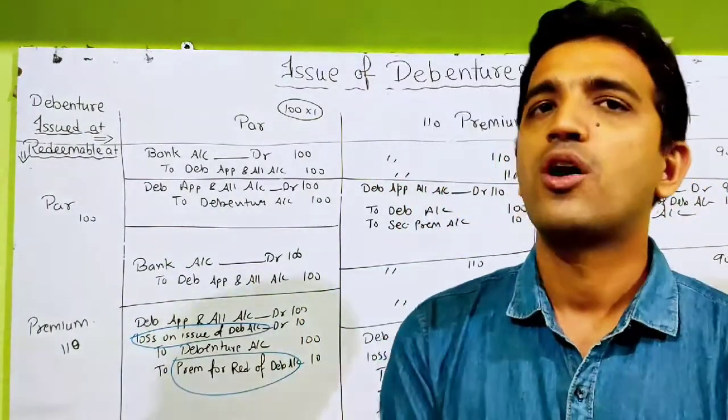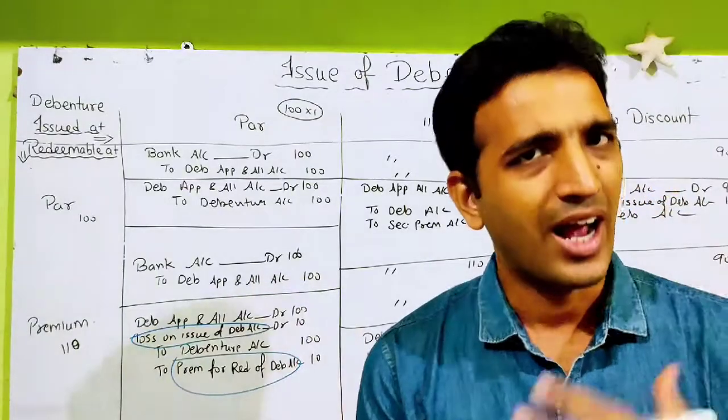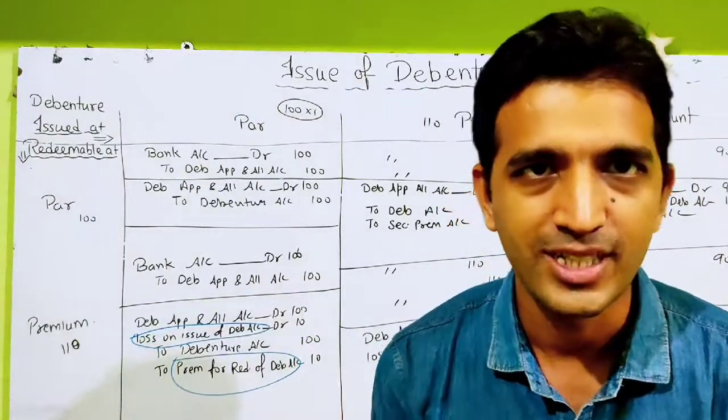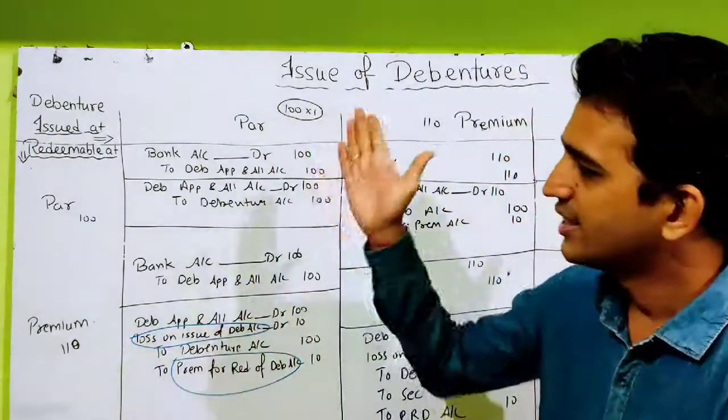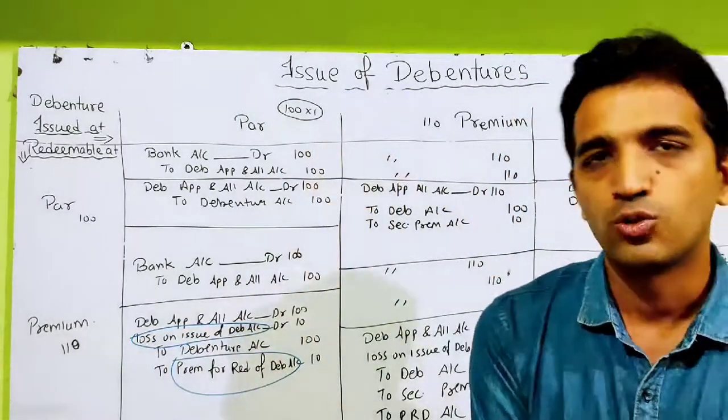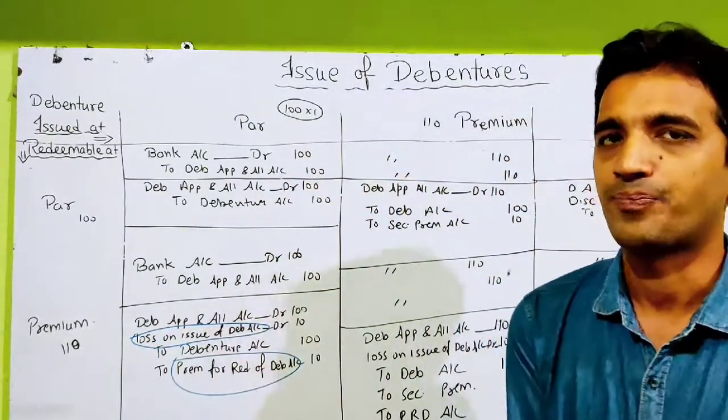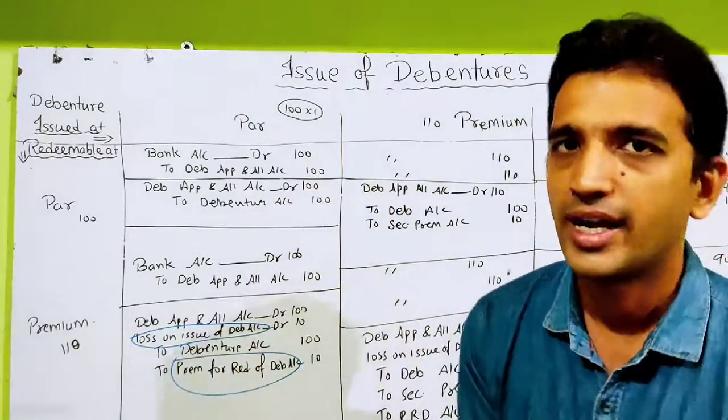So that was all about the debenture accounts — how to show the accounting treatment and how to score 6 marks in this set of questions. Thank you.